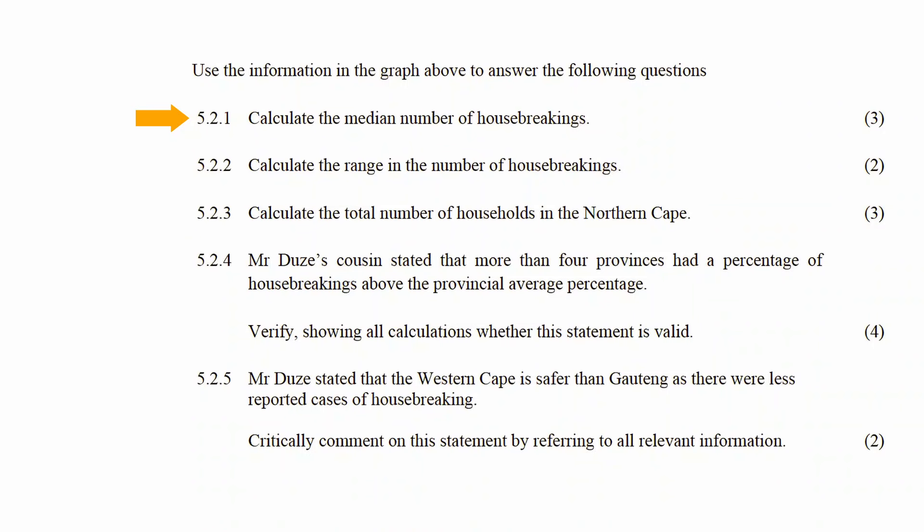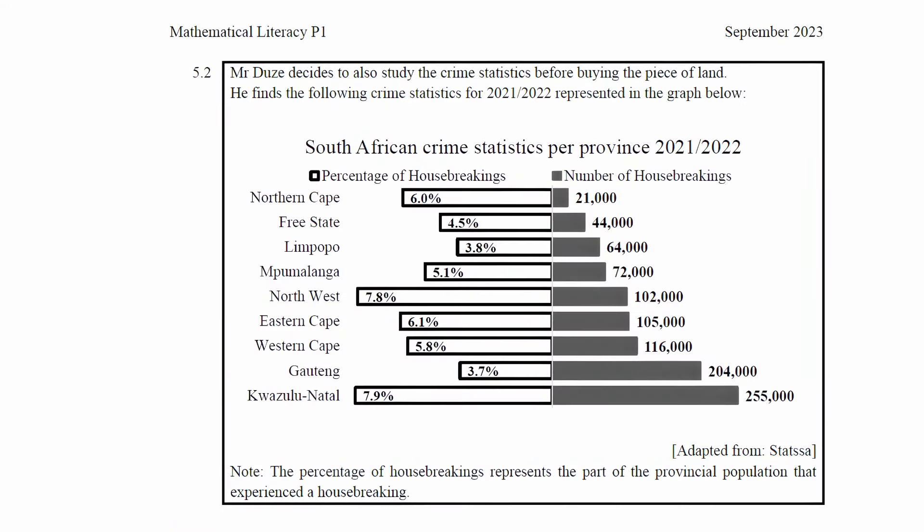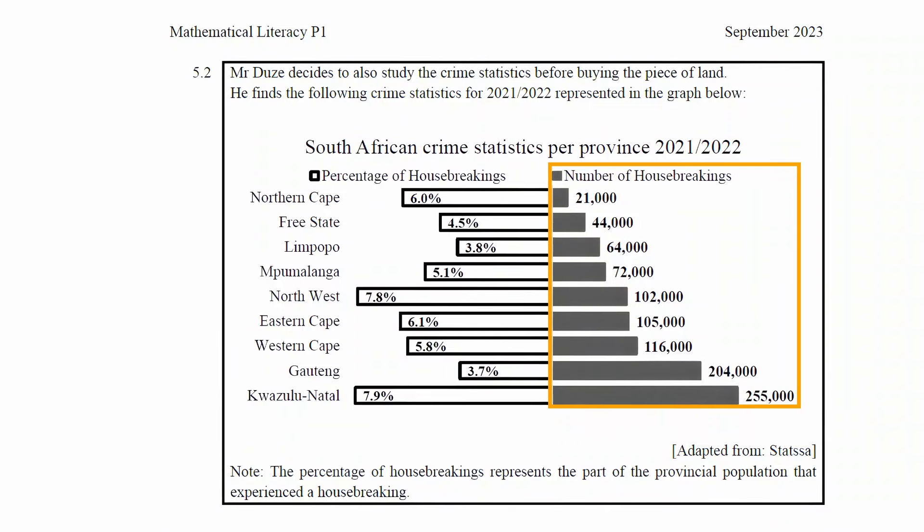In question 5.2.1, you have to calculate the median number of break-ins. To calculate the median of a data set, we first have to arrange the data in ascending order. By observation, we can see that the data for the number of house break-ins are already arranged in ascending order — that is, from the smallest value to the largest value.